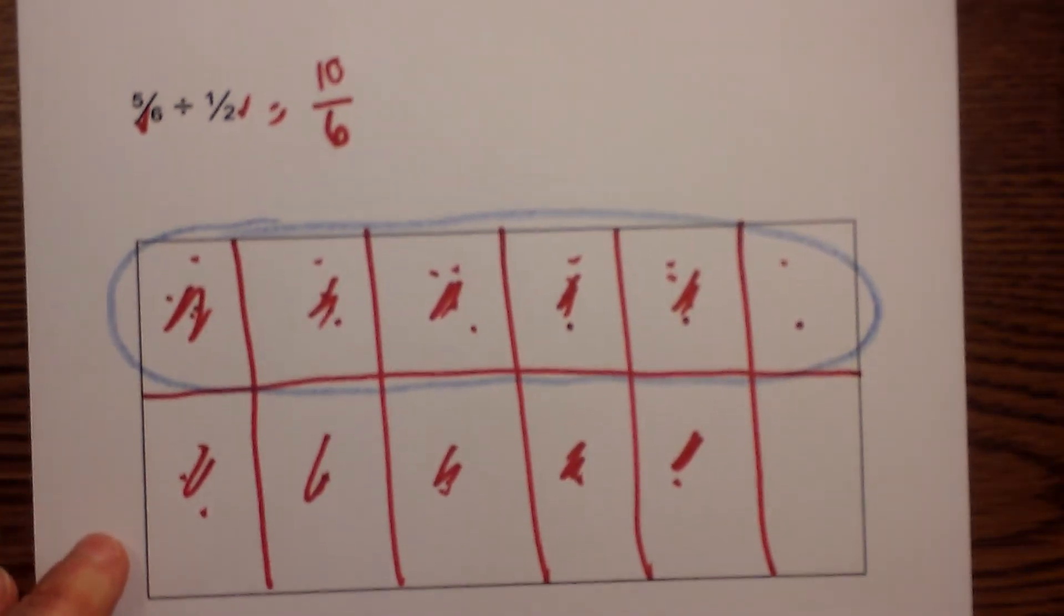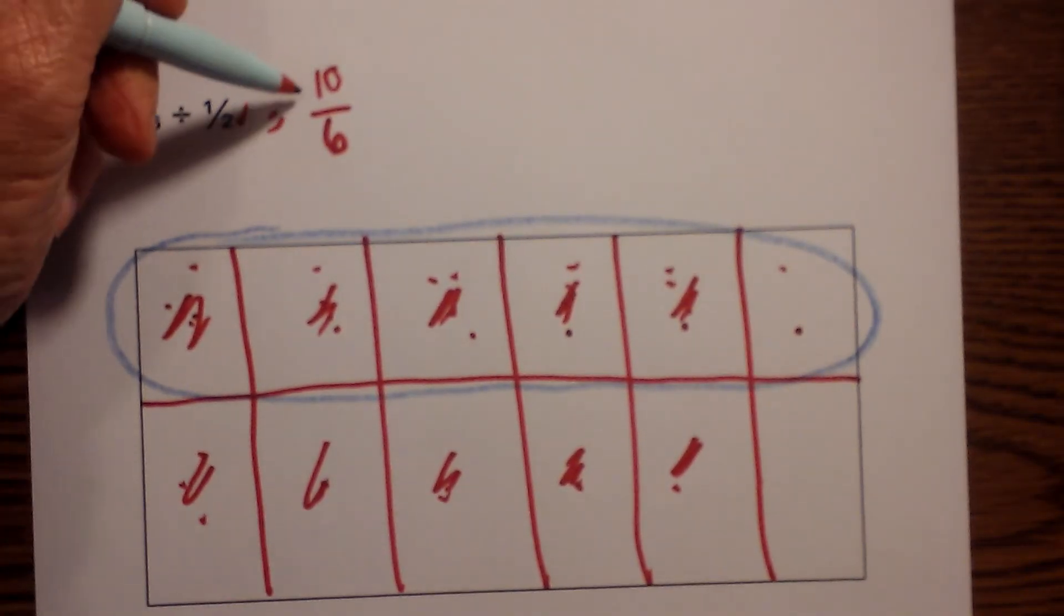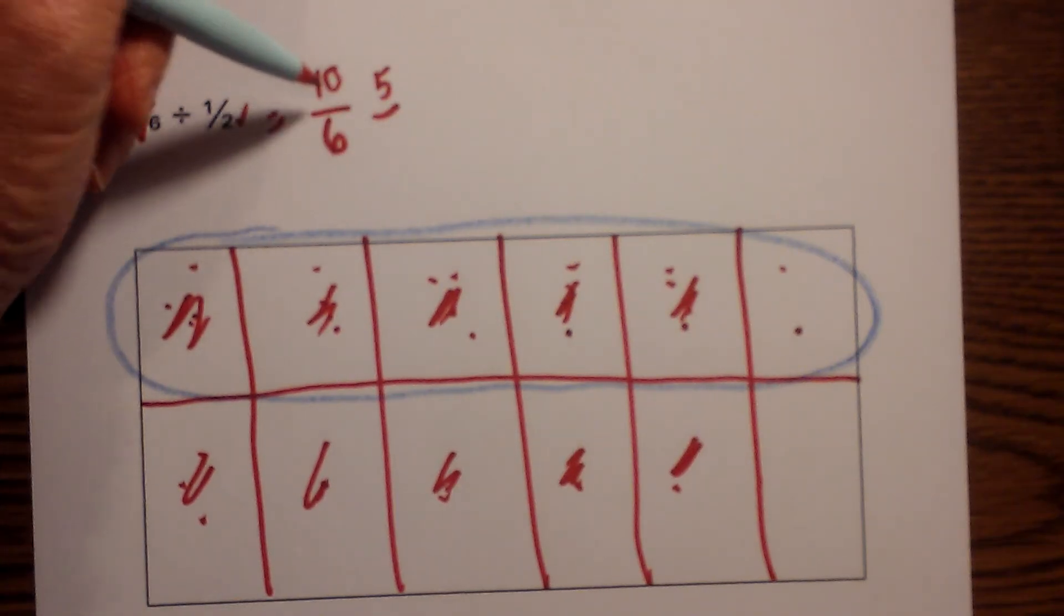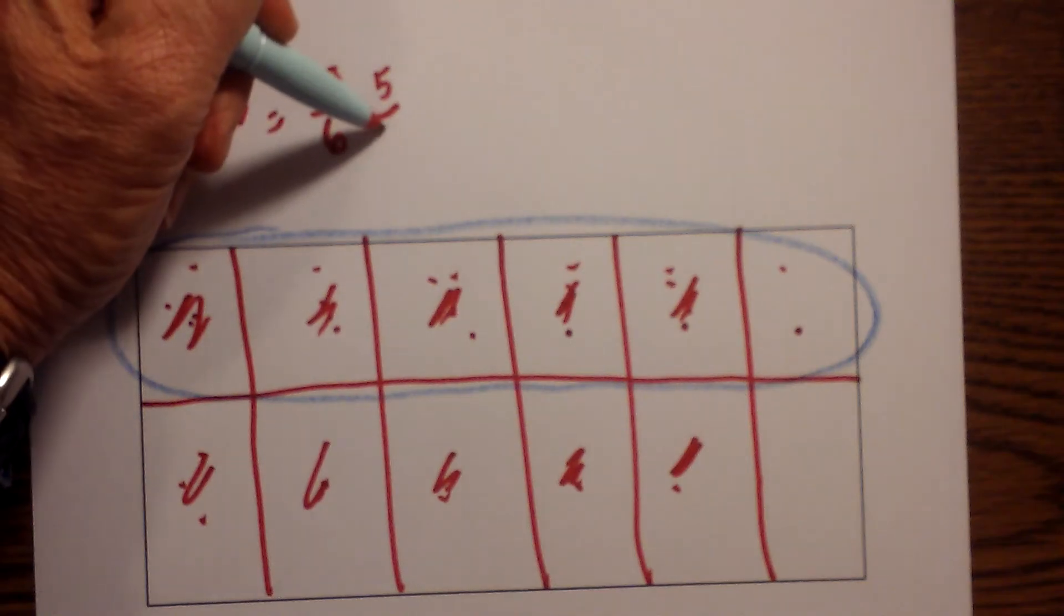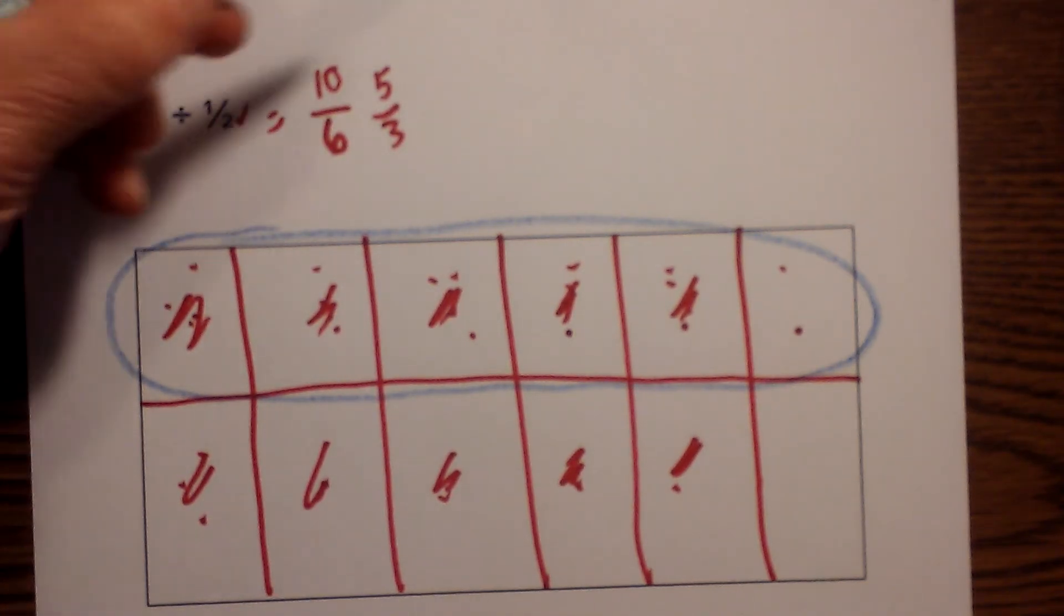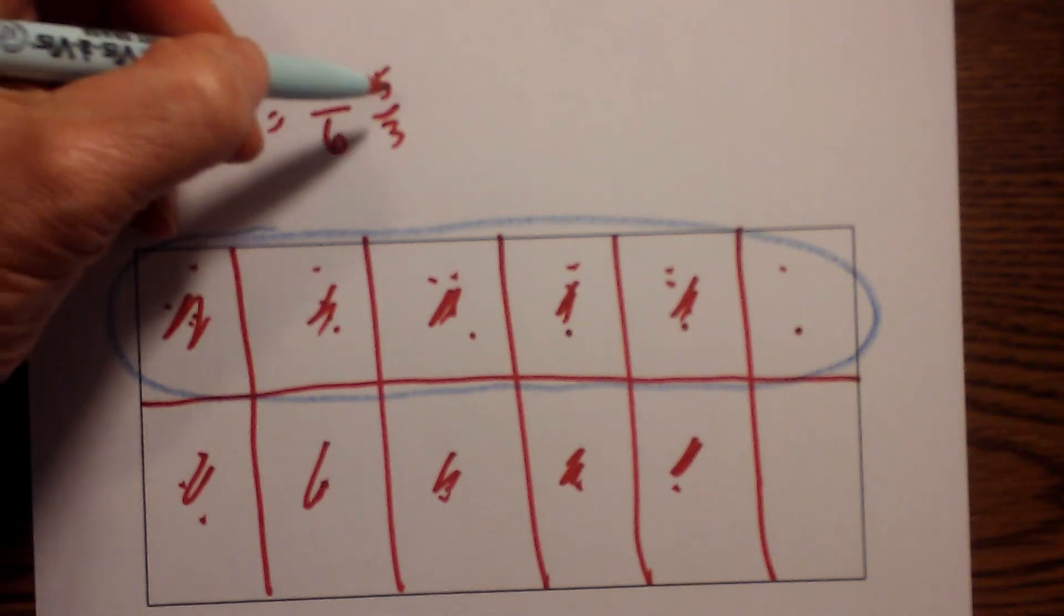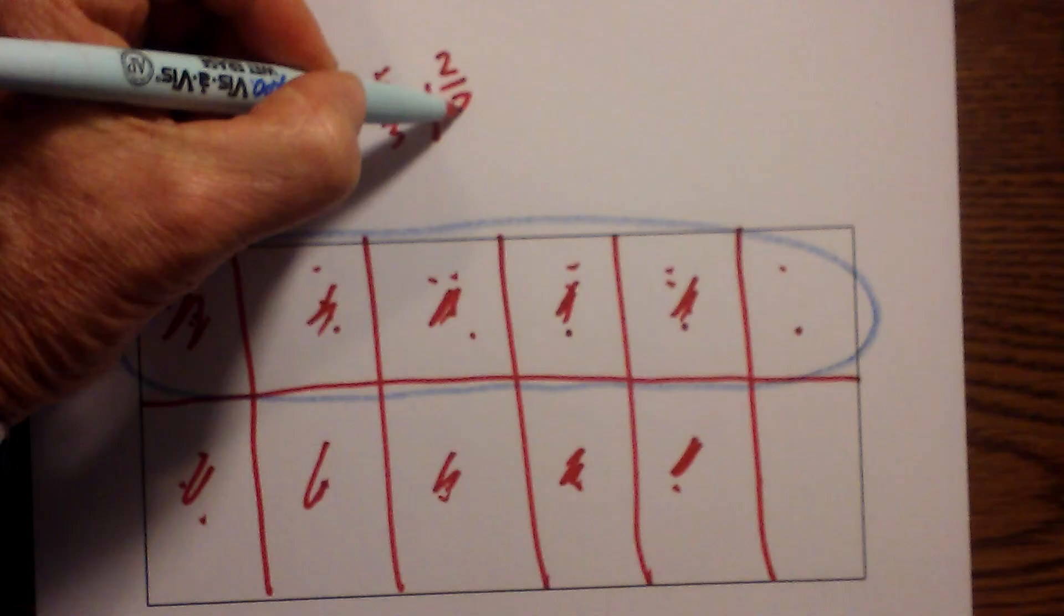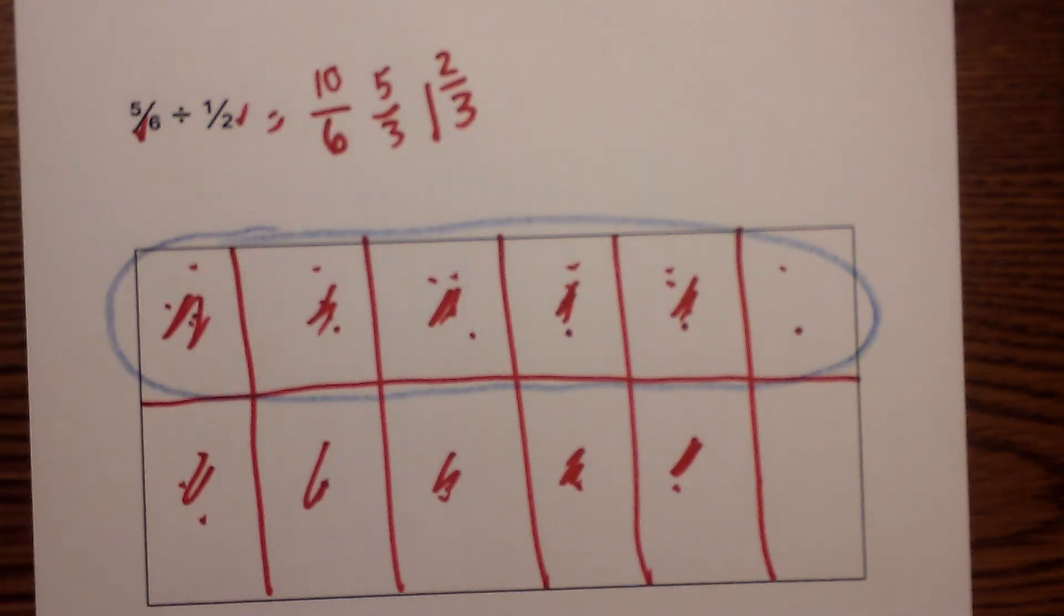If I would like I can go ahead and reduce that. I can divide each by 2 and 2 goes into 6 three times. I now can convert that into a mixed number if I'd like. So 3 goes into 5 one time with 2 left over. So that would be 1 and 2/3.